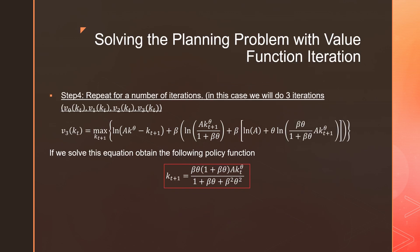Step number four is that we're going to repeat the iterations for a fixed amount of time. In this case, we're just doing three. So we're just going to consider one more time. And I'm just plugging in everything. I didn't really go through the math. But if we solve this equation, we should obtain the following policy function: βθ(1+βθ) times our production function all over 1+βθ+β²θ².